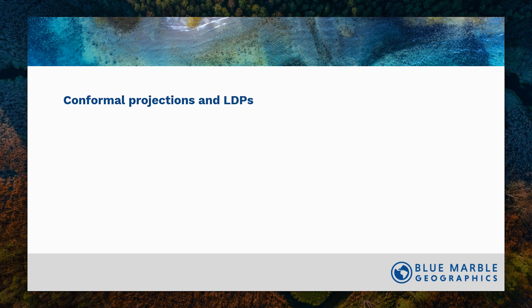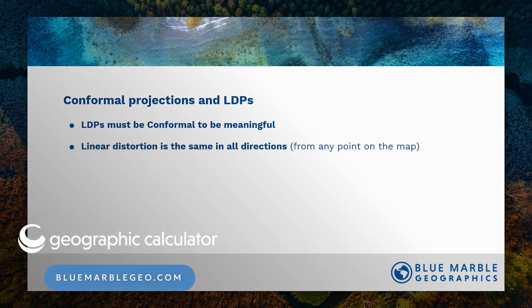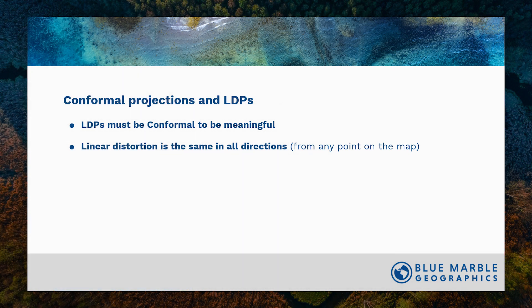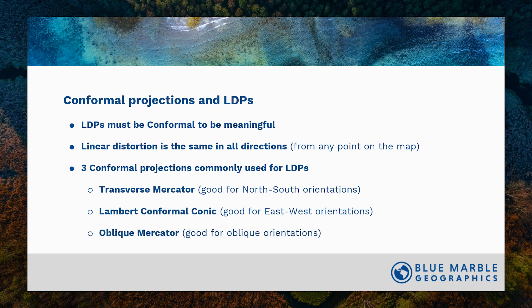We use conformal projections to create LDPs, because linear distortion is the same in all directions on a conformal projection from any map point on the map. Three conformal projections commonly used for LDPs are the transverse mercator — good for north-south orientations — Lambert conformal conic for east-west orientations, and the oblique mercator if the orientation is something other than those two.